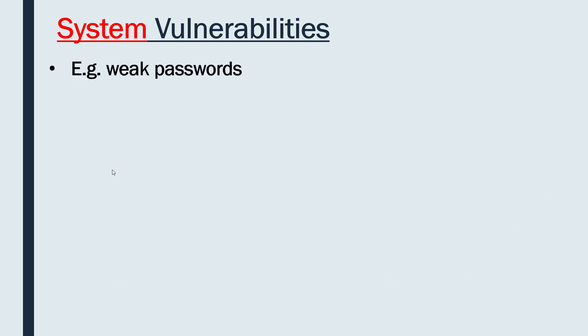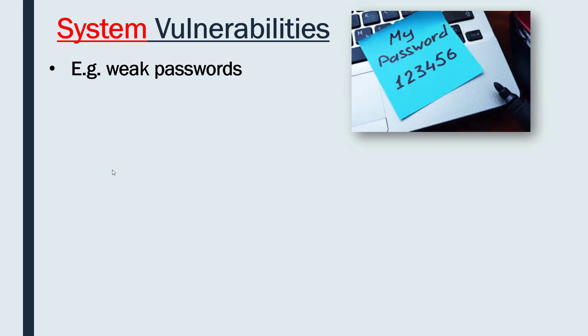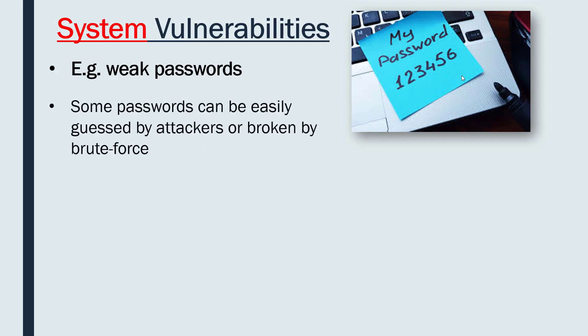Another common system vulnerability is having weak passwords. A password like '123456' is very weak, but many people use something very similar. This might enable an attacker to simply guess passwords, bypassing all other security. Even a random but very short password can be broken fairly easily by brute force methods, where the attacker checks every single combination. You get stronger passwords by making them longer, mixing up the characters, and not using obvious phrases or names.